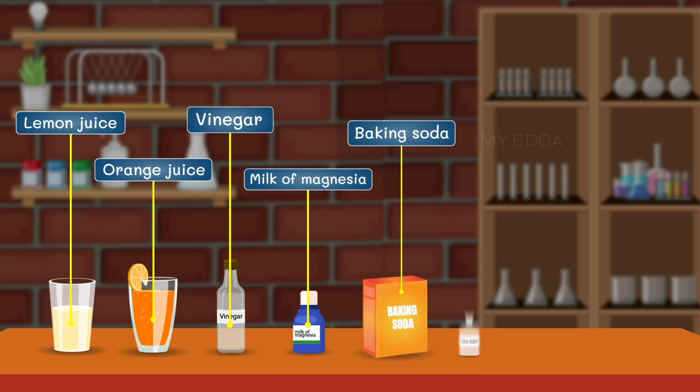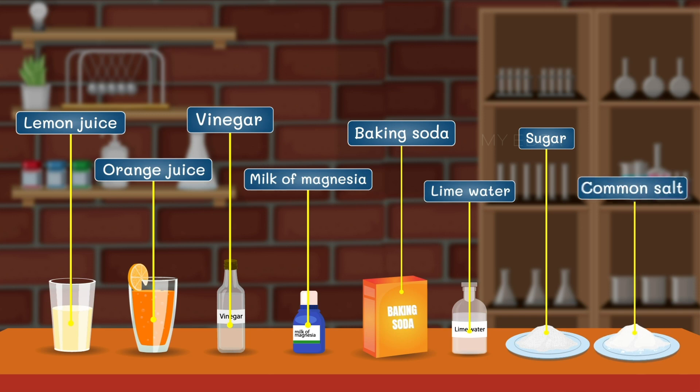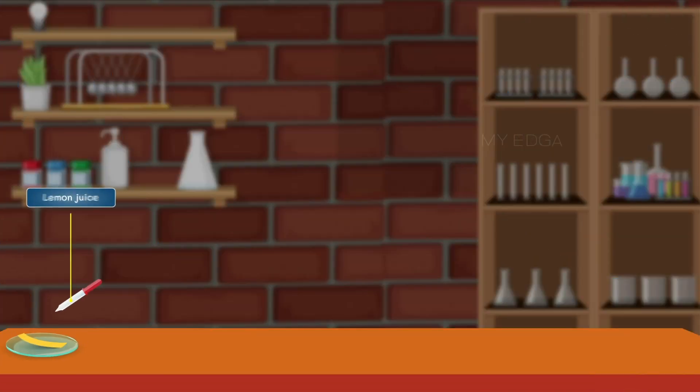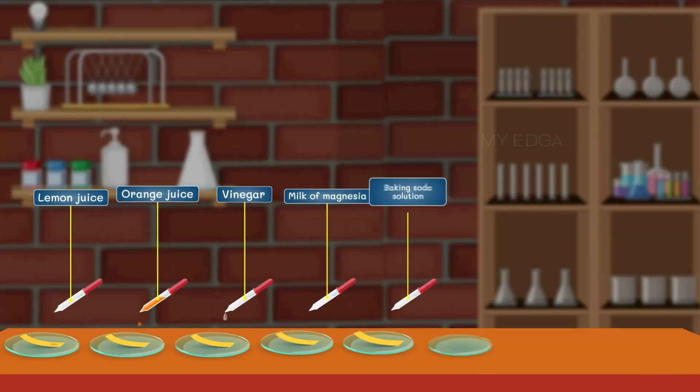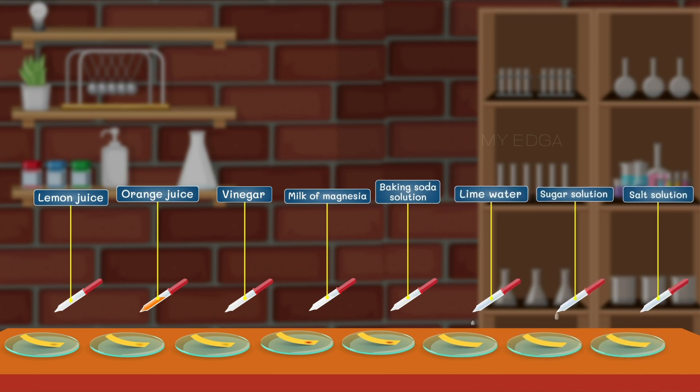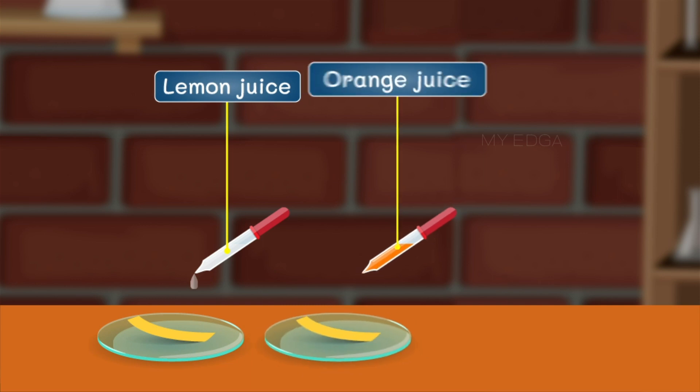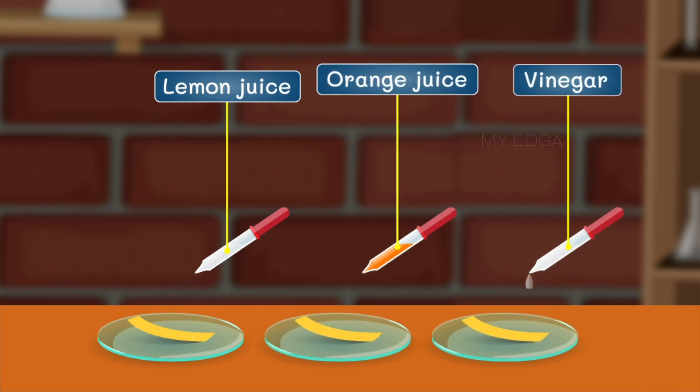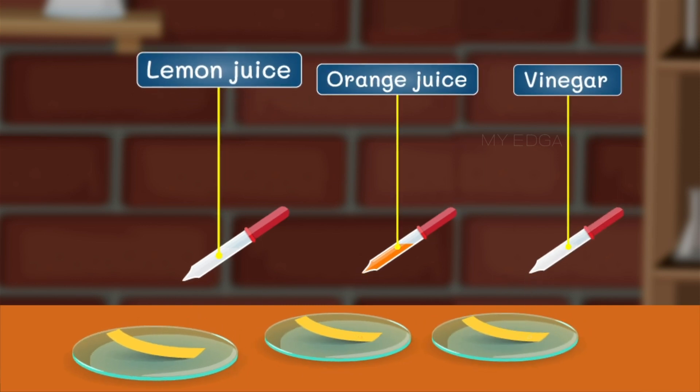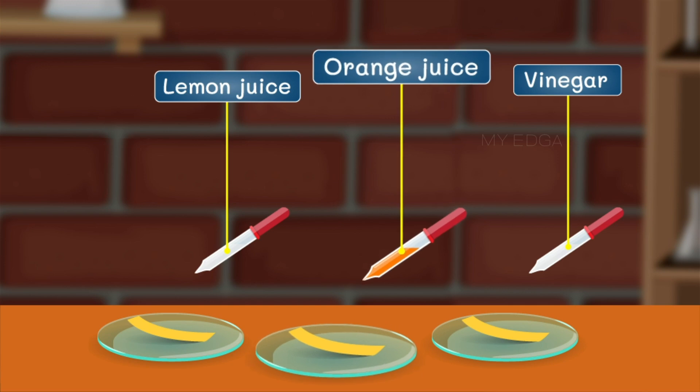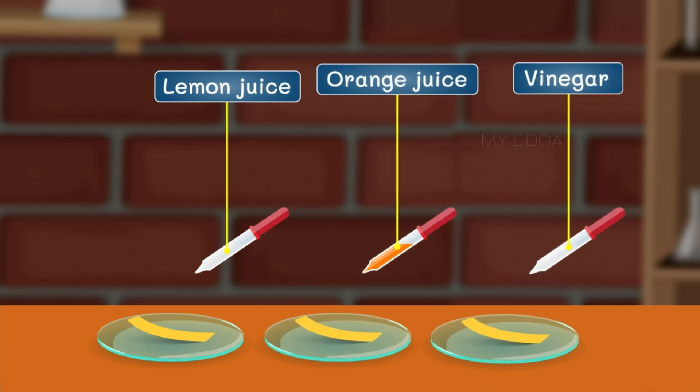Drop the solutions of these substances onto the turmeric paper. We can see that there is no color change when we added the lemon juice, orange juice and vinegar solutions to the strip.